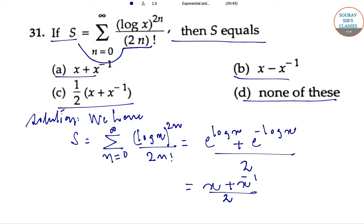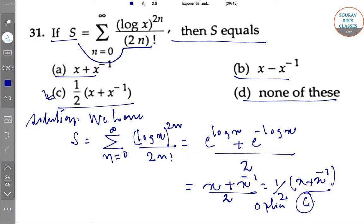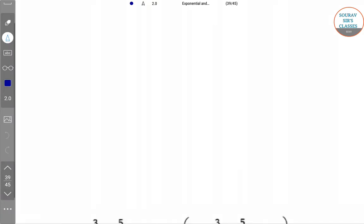Therefore option C is the correct answer: half into x plus x to the power minus 1. Let's move to the next question.